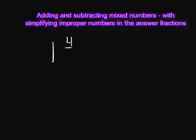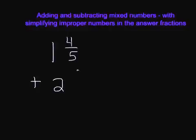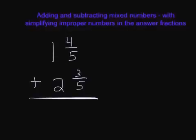In this lesson we're going to talk about how to add and subtract mixed numbers that have to be simplified at the end. Let's look at some examples of exactly what I mean. First we're going to look at 1 and 4 fifths plus 2 and 3 fifths. You can see that these fractions have the same denominator, so that means we can simply add the numerators together when we add our fractions.